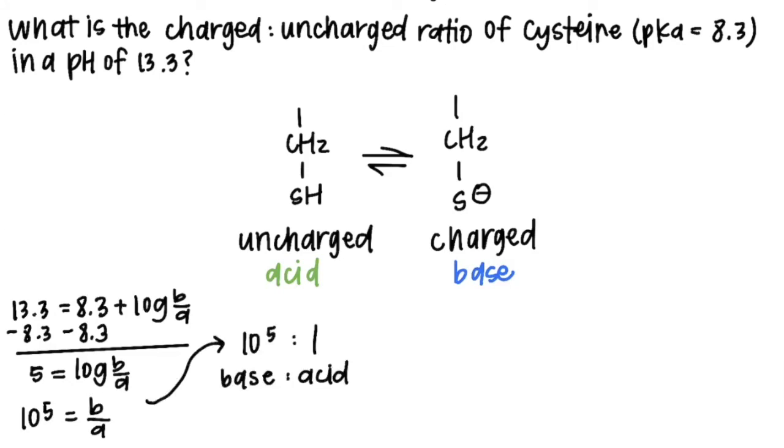But I'm going to go ahead and rewrite it. So my base to acid ratio is 10 to the 5 to 1. And now I just assign the uncharged and charged that I already figured out earlier. So in this case, my ratio is charged to uncharged because the base we decided was charged already and the acid was uncharged.